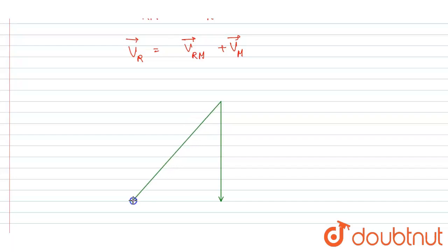If I write down the velocity of the man, it would be this. And if you see, this is the velocity of the rain with respect to man, and we added the velocity of the man and we got it as velocity of the rain.